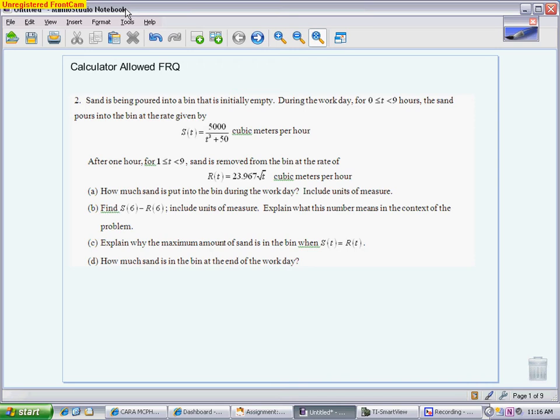So this particular problem is having sand being poured into a bin that is initially empty, so we don't have to worry about initial value. During the workday, we're looking at a nine-hour period. We have a rate in which the sand is going into the bin. After an hour, from one to nine hours, we have a rate that sand is being removed from the bin. And we're going to be asked a series of questions about the sand. How much is going in? How much is coming out? When is there a maximum? Things like that. So everything is dealing with these rates of sand. I'm going to take you through each one.